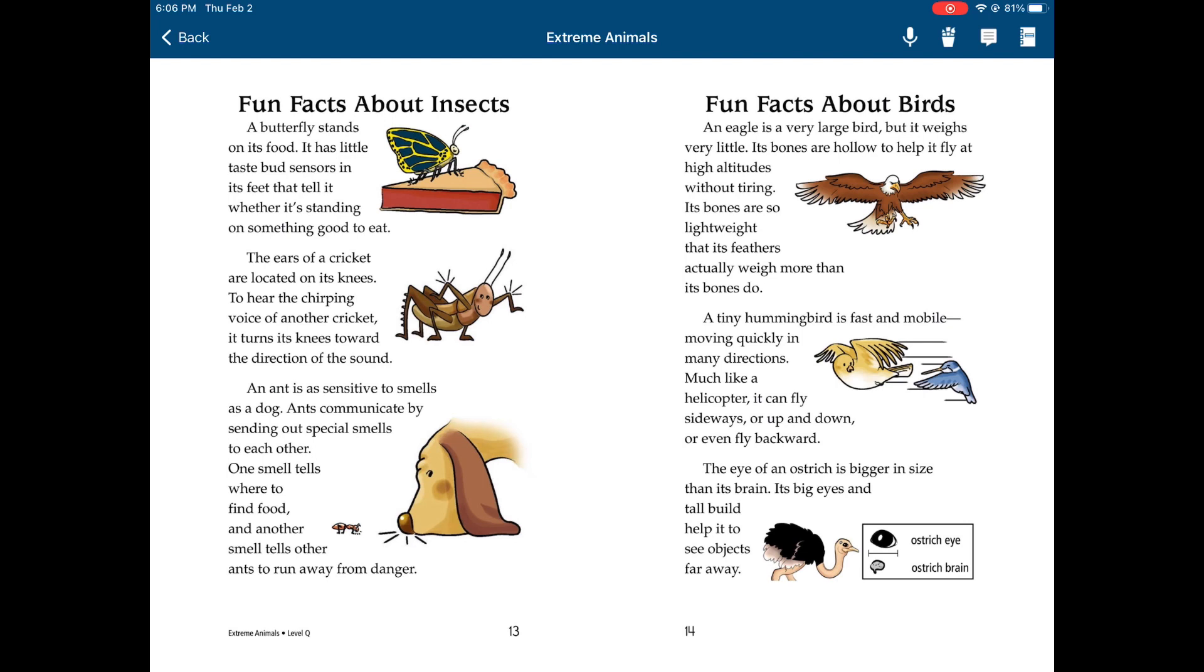The eye of an ostrich is bigger in size than its brain. Its big eye and its tall build help it see objects far away.